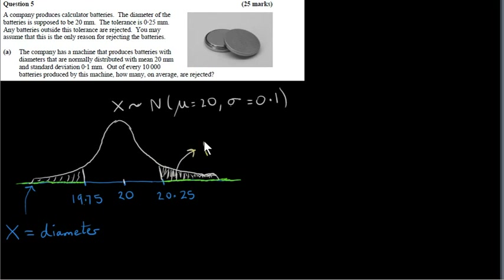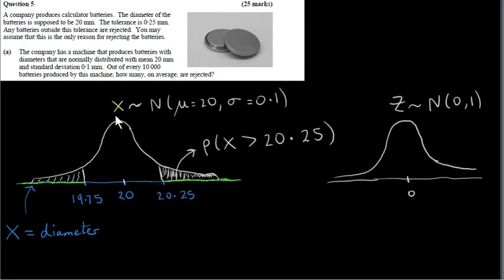The area of this region is the probability that X is greater than 20.25. To get this probability, we need to transform this normal distribution to the standard normal distribution so we can use tables. We will transform the random variable X to the random variable Z, where Z follows a normal distribution with mean 0 and standard deviation 1. The standard deviation of the original distribution is 0.1.